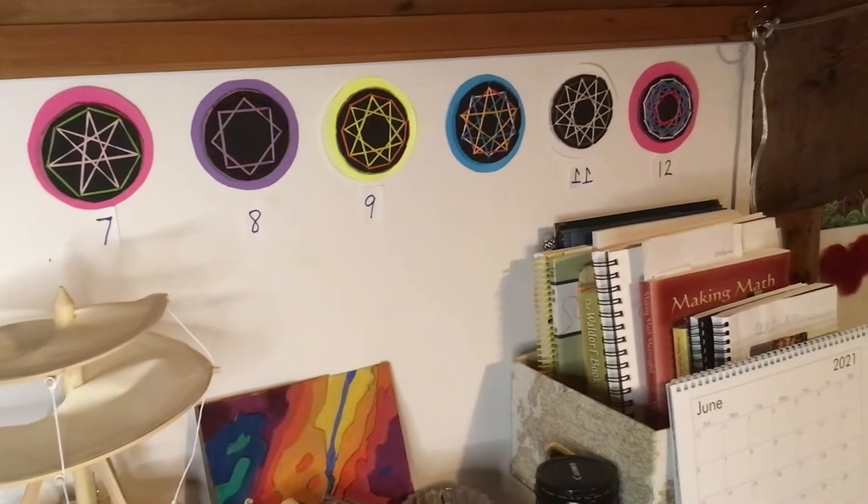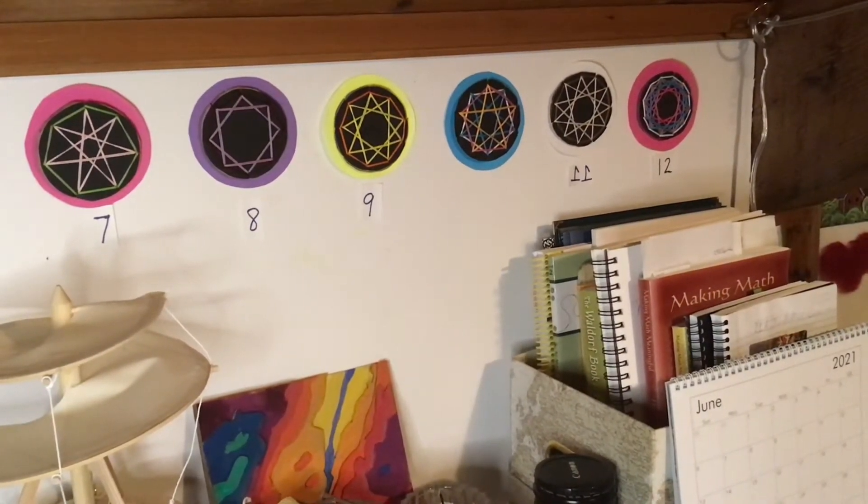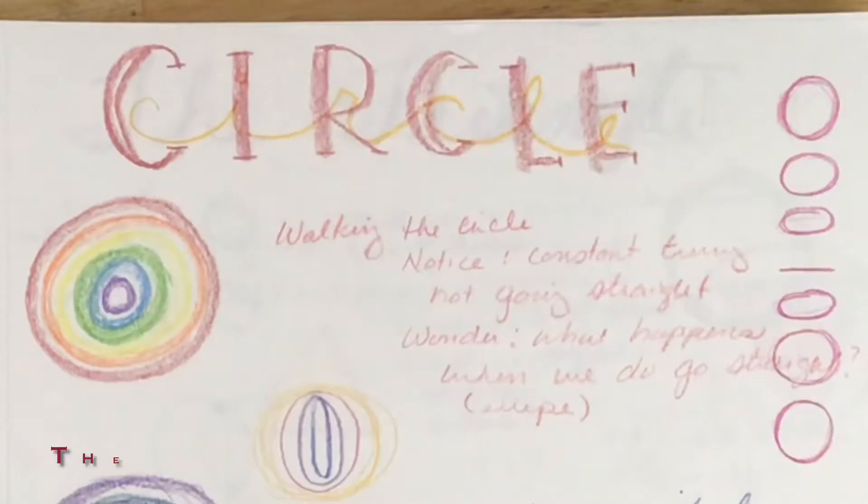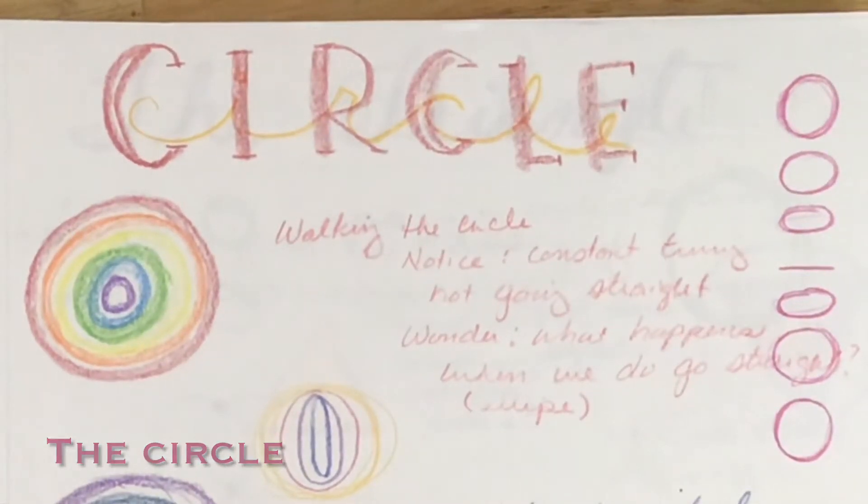The wonderful thing about these Waldorf circles in the first years of education is that you can visually see a number's factors by the shapes that form within that circle. So we are moving in the same direction with geometry. We're going to start with the circle, and then we're going to move through the same forms, how line forms, how triangle forms, and so forth, from the circle by the number of dots on the circle.